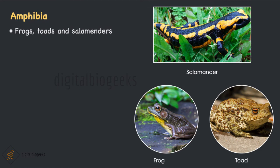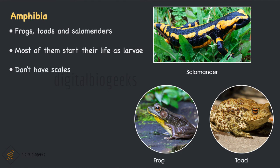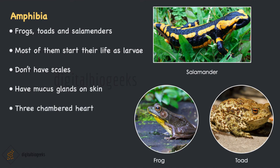Frogs, toads and salamanders are examples of Amphibia. They live in a wide range of habitats, ranging from land to aquatic. Most amphibians start their lives as larvae living in water. They don't have scales on their skin as fishes do; they have mucous glands on their skin, and these mucous gland secretions help in gas exchange. They have a three-chambered heart, unlike the two-chambered heart of fishes. Respiration is through either gills or lungs — larvae breathe with gills and adults with lungs. Some terrestrial salamanders and frogs lack lungs, so they rely on mucous glands for gas exchange.